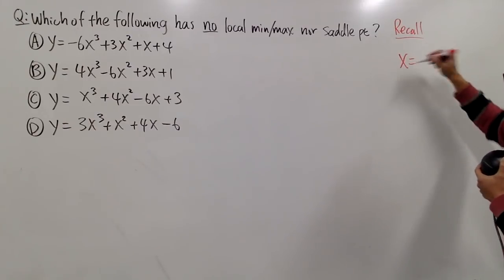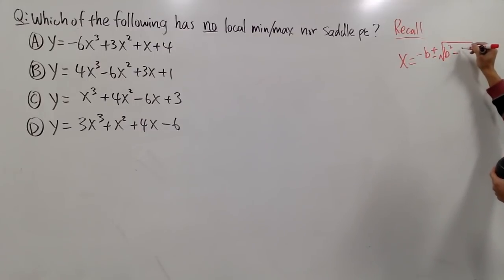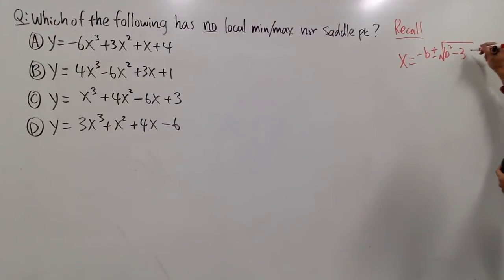The formula is that we have x equals negative b plus or minus square root of b squared minus 3ac all over 3a. This is the vertex formula for a cubic function.